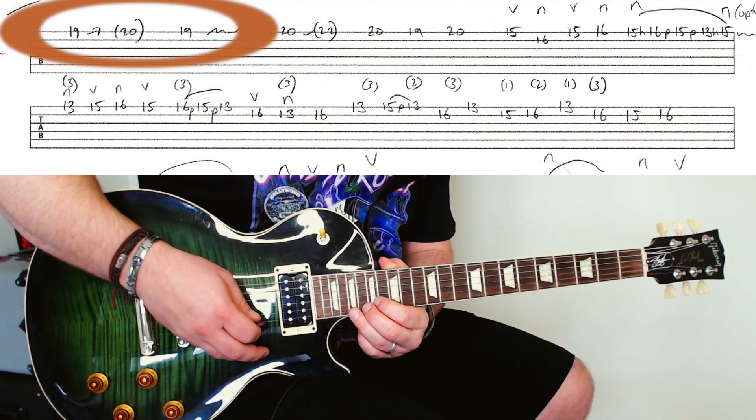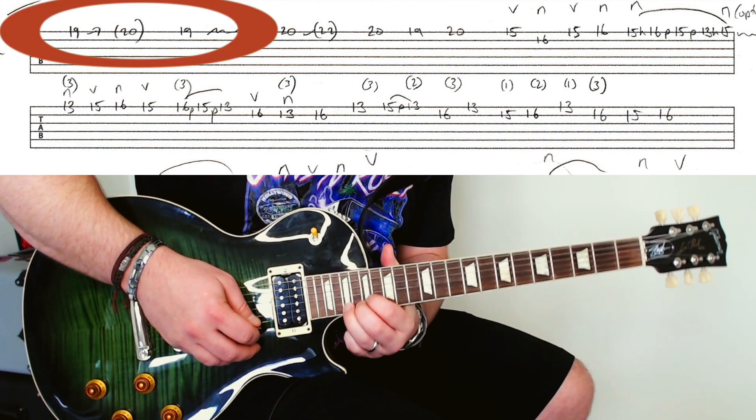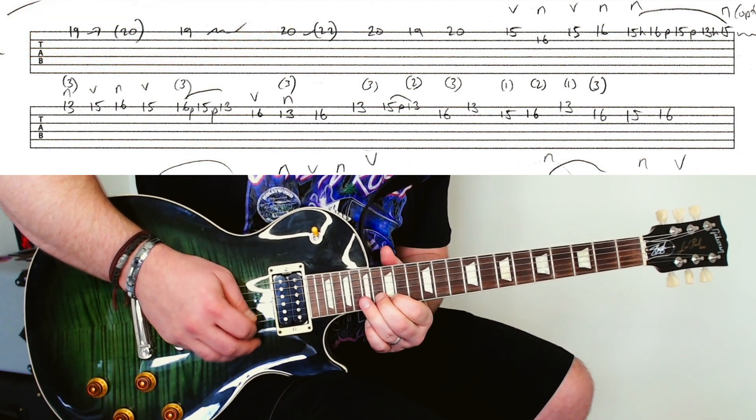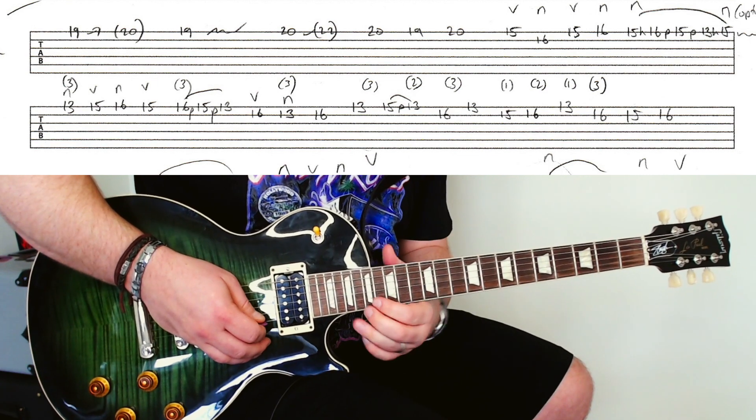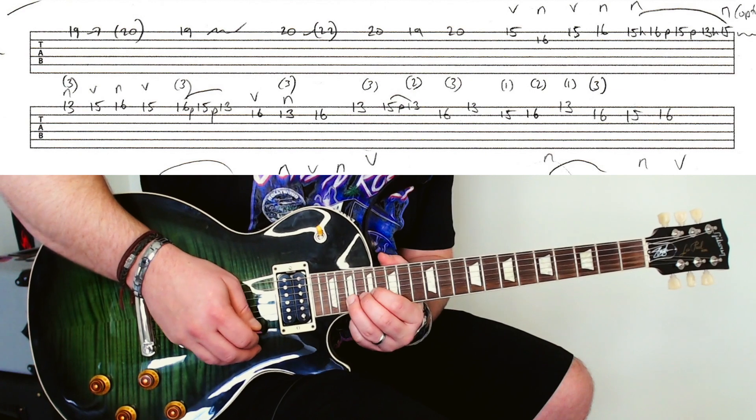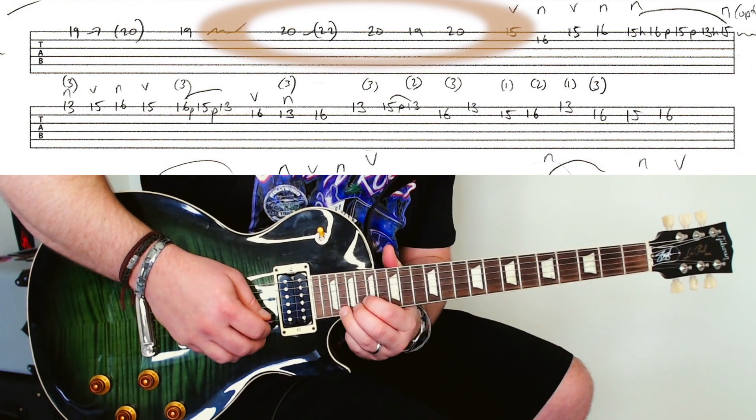Bring it up there and then you're going to jump up to that 19th fret and bend it. There's a clever fingering trick that I'm going to show you in a second as well. So 19th fret with a bend, vibrato, and then bend.